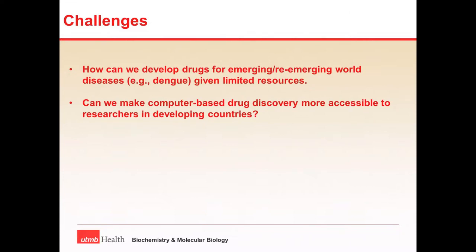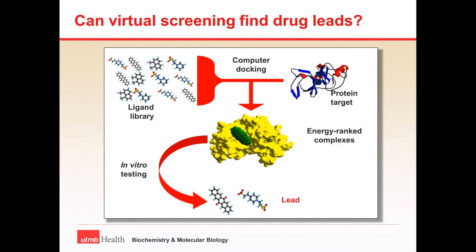The approach we're taking is computer-based drug discovery. We identify a protein target — a part of the microbe that we believe we can stop from working. That's the first thing: we need to find part of the microbe that we want to prevent from doing its job. And then we want to find a small molecule that will bind to this protein target so that we stop it from doing whatever its job is.